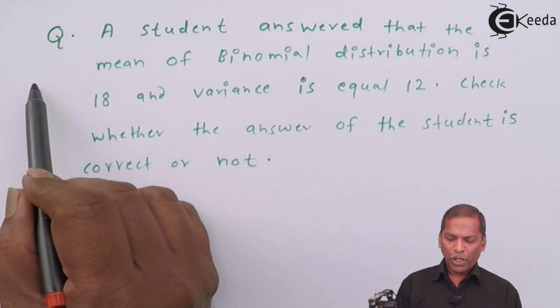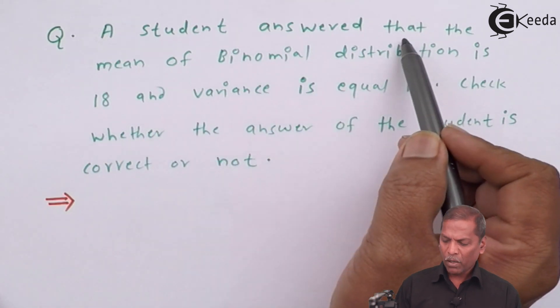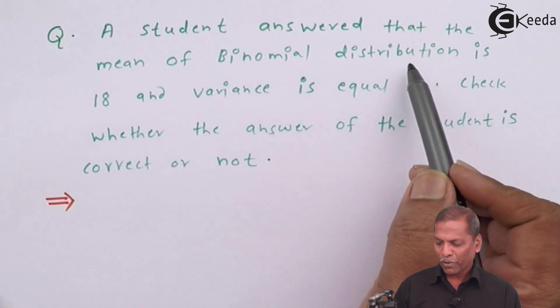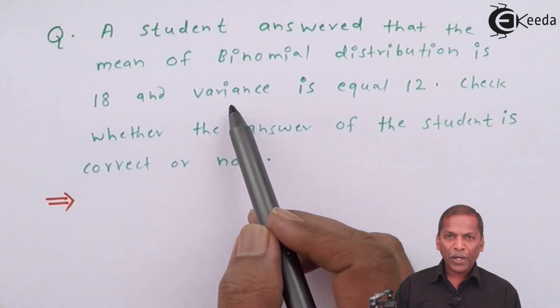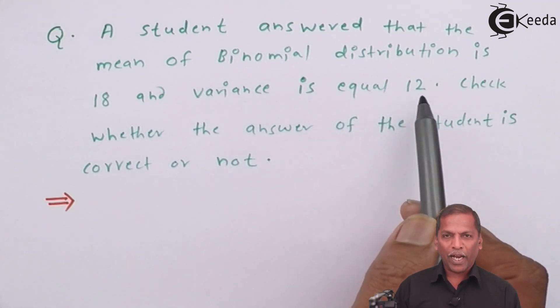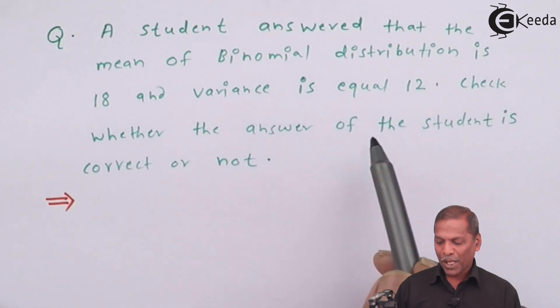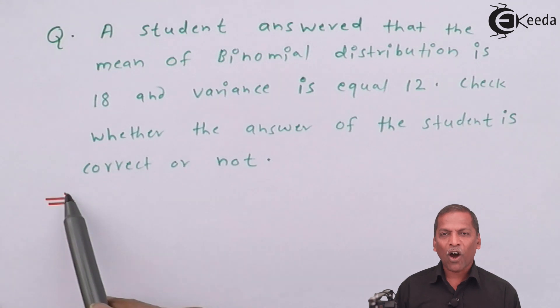The question is, a student answered that the mean of binomial distribution is 18 and variance is equal to 12. Check whether the answer of the student is correct or not.